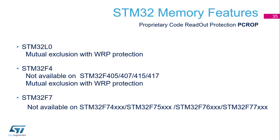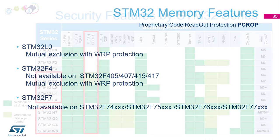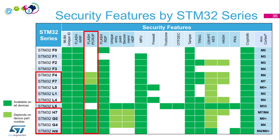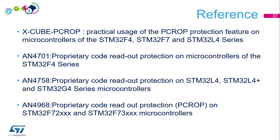Some specifics by family: on the L0 there is a mutual exclusion with WRP protection — if WRP is activated, PCROP cannot be activated, and vice versa. On the F4, PCROP is not available on the Z0TH1. There is also mutual exclusion with WRP for others. On the F7, take care — PCROP is not available on F74, F75, F76, and F77. A table summarizes which families support flash PCROP. For configuration, download the X-CUBE-PCROP code example, which covers F4, F7, and L4, and includes associated application notes explaining how to compile and modify scatter files.